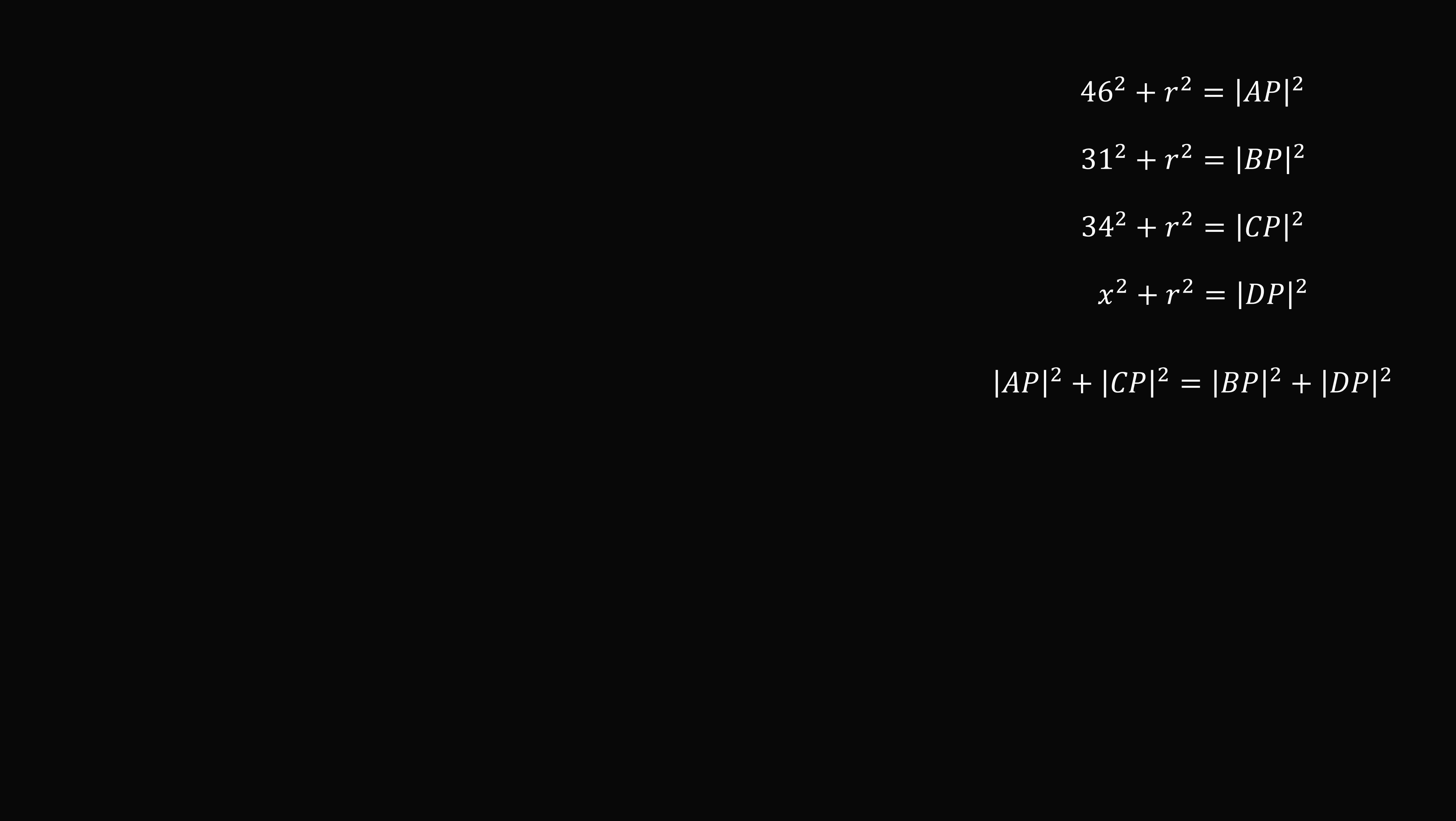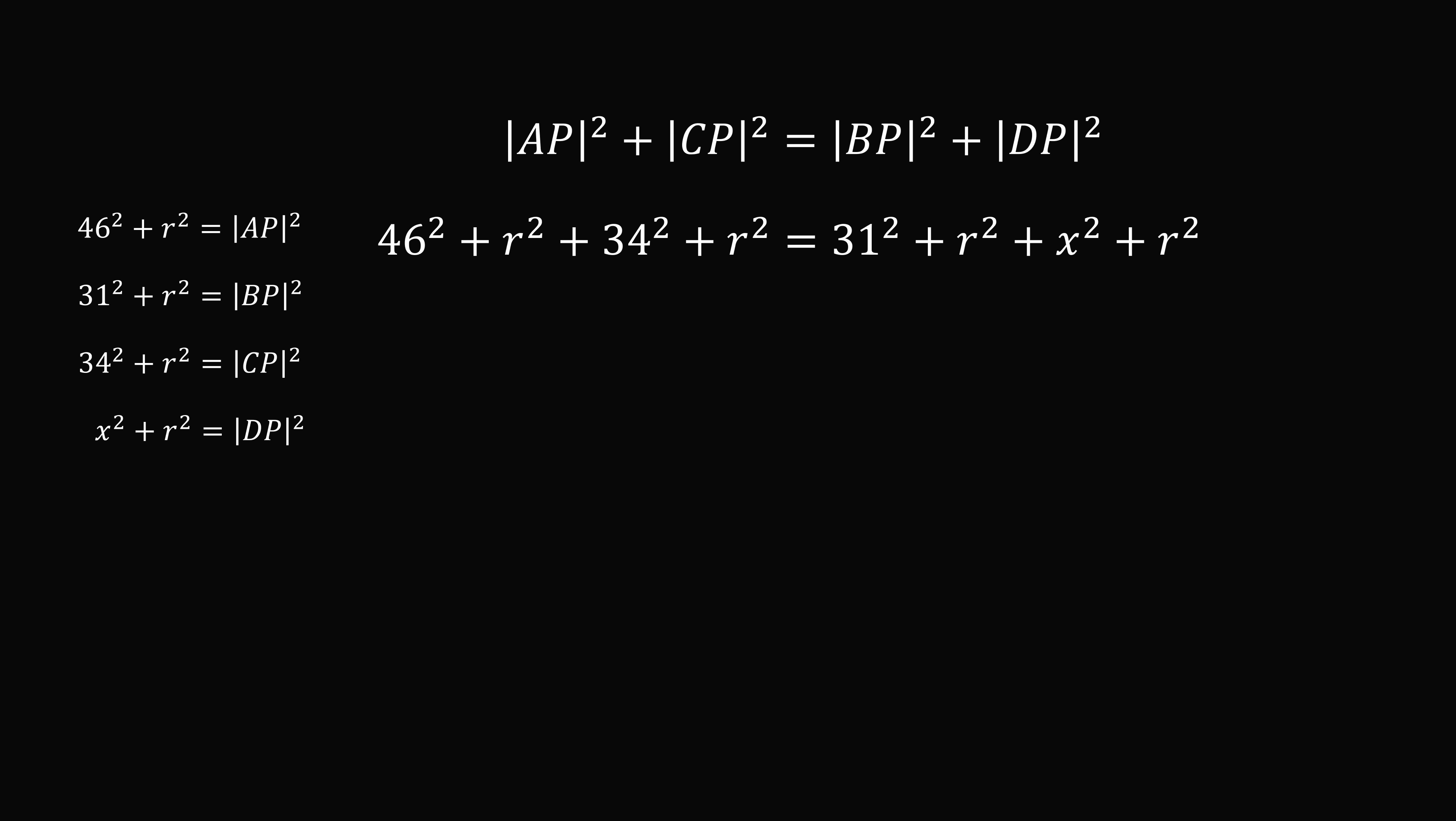So this gives us an equation. We now know what AP squared, CP squared, BP squared, and DP squared are equal to in terms of R squared. So we can substitute in from those four equations we've derived. So we have 46 squared plus R squared plus 34 squared plus R squared is equal to 31 squared plus R squared plus X squared plus R squared.